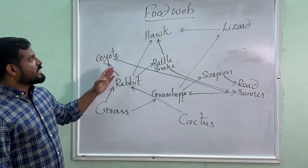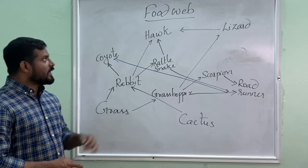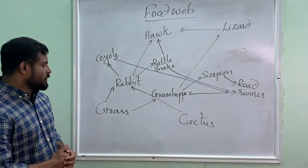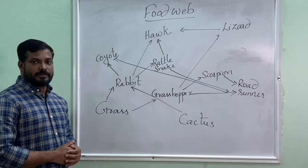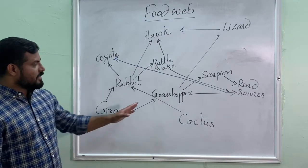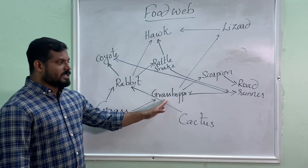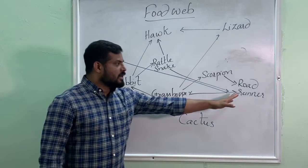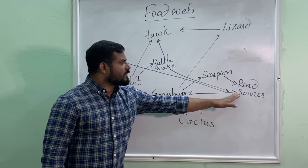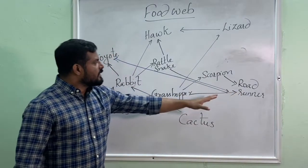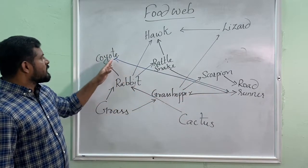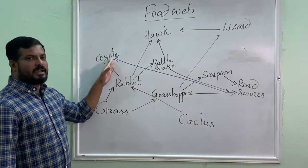Here is an example of a food web. In this food web various food chains are shown. First example: grass, grasshopper, roadrunner — it's a small bird. This roadrunner is consumed by coyote.